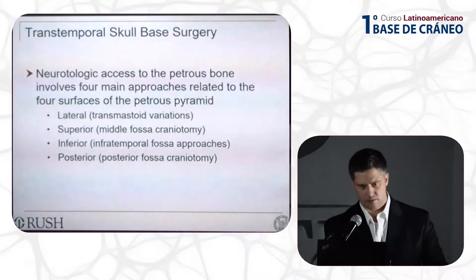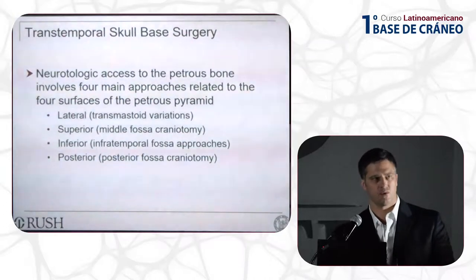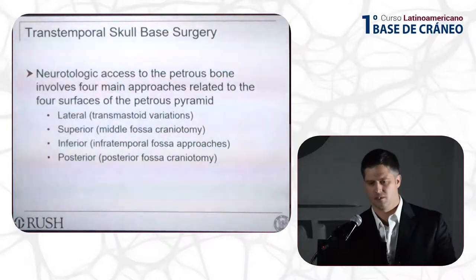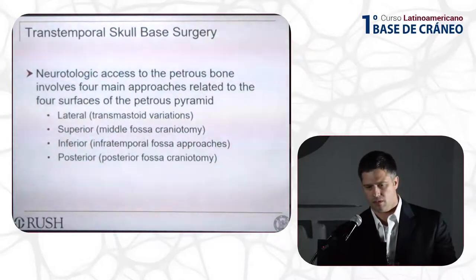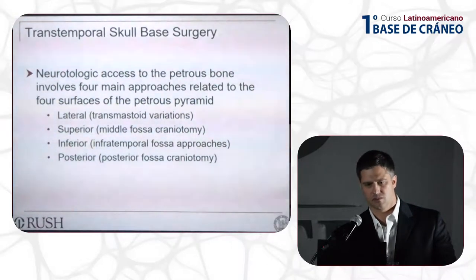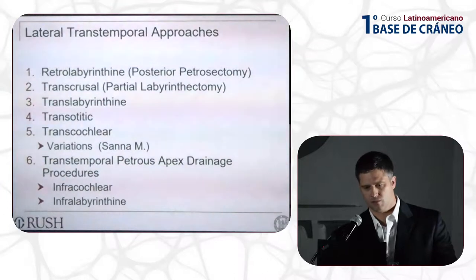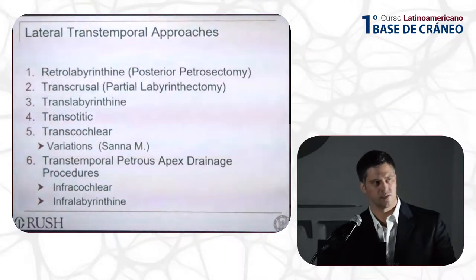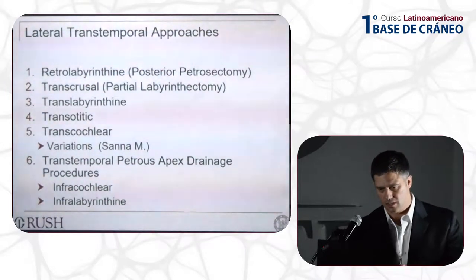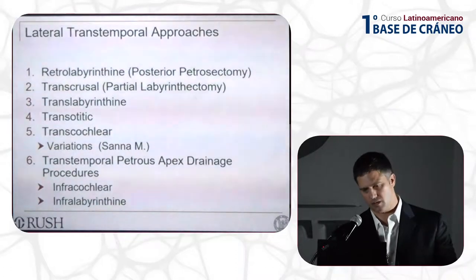Neurologic access to the petrous bone involves four main approaches related to four surfaces of the petrous pyramid: lateral, superior, inferior, and posterior. The focus of this talk is on the translabyrinthine trans-mastoid approach. We'll briefly review the retro-labyrinthine approach, trans-crucial, partial labyrinthectomy, trans-labyrinthine, trans-otic, trans-cochlear, some variations by Marosana, and some petrous apex drainage procedures that are fairly common.